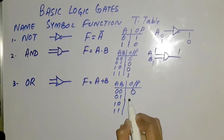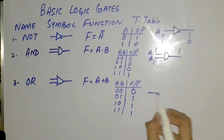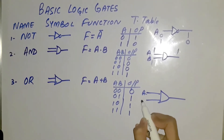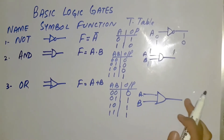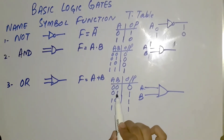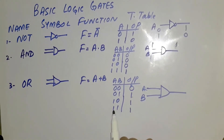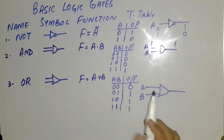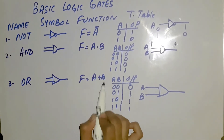0-0 will give 0, 0-1 will give 1, 1-0 will give 1, and 1-1 will give 1. If both inputs are 0, the output will be 0. If any one of them is 1, the output will be 1. Similarly, 1-0 gives 1 and 1-1 gives 1. If both have 1, output will be 1. Therefore, the OR gate is actually the addition of a and b.